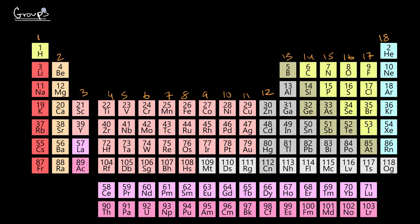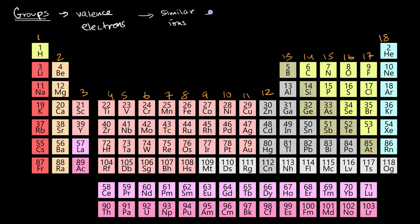The reason why they all have similar properties is that in most cases, they have the same number of valence electrons. Valence electrons are the reactive electrons — the ones that might interact with other things. And because elements with similar valence electrons will have similar reactivities, they will form similar ions and they will have similar roles in ionic compounds.